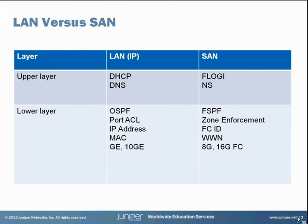Similarly, Open Shortest Path First or OSPF is used to calculate the best path to a destination in the LAN environment. SAN has Fabric Shortest Path First or FSPF to find the best path to the storage device. In the upper layer, LANs have Dynamic Host Configuration Protocol or DHCP, which maps to FLOGI or Fabric Login in the SAN environment. And Domain Name System or DNS equates to the Fibre Channel Name Server or NS. The terms are different, but conceptually, they're much the same.